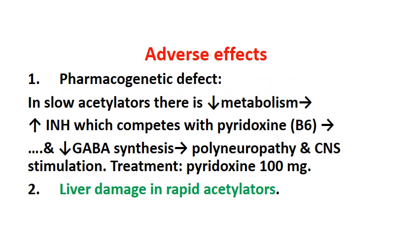Regarding adverse effects of INH, the first is a pharmacogenetic defect. Rapid acetylators — for example making up 90–95% of Asian and Japanese populations — contrast with slow acetylators, who represent more than 70–75% of people in the Middle East. Due to slow acetylation of INH, its metabolism is decreased or delayed, causing INH to accumulate, which competitively decreases the effect of pyridoxine, or vitamin B6.